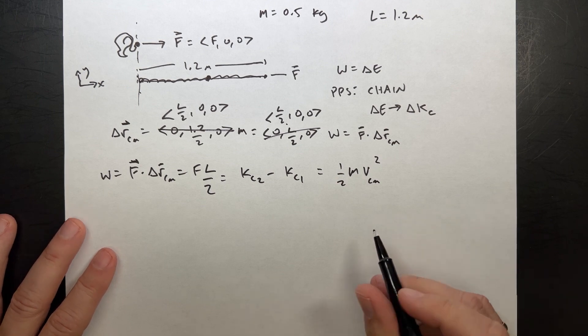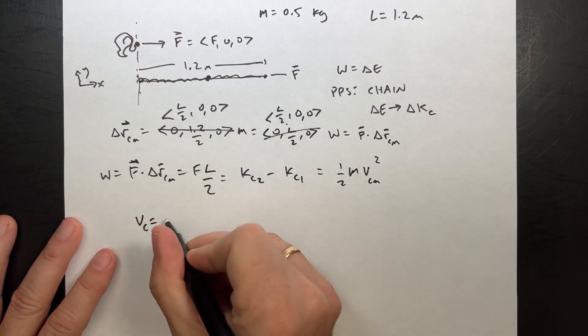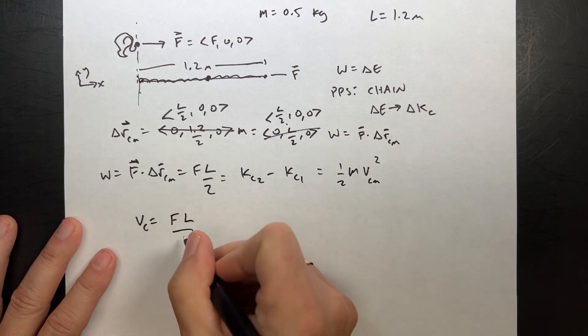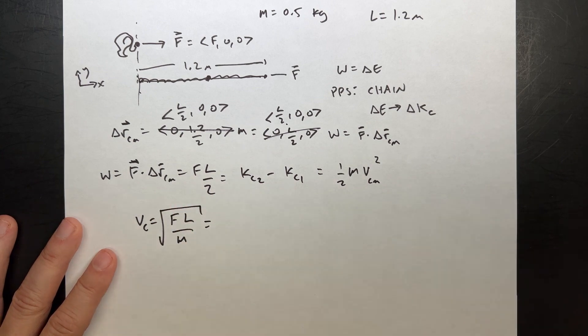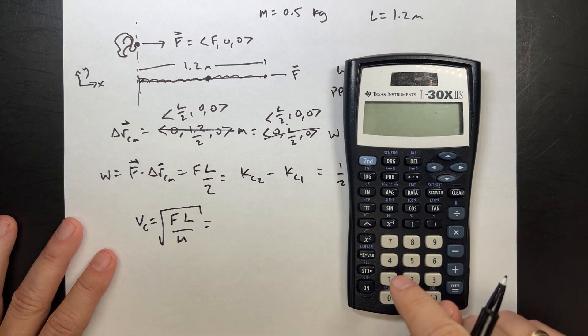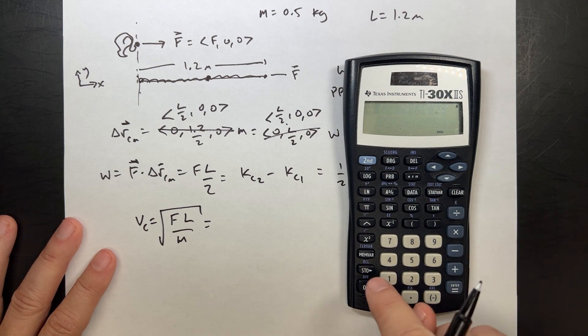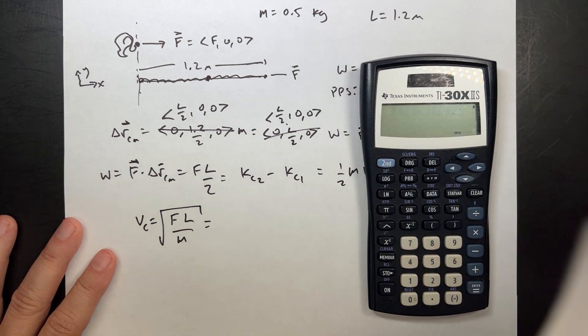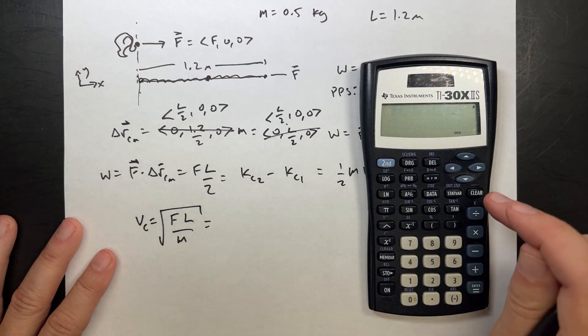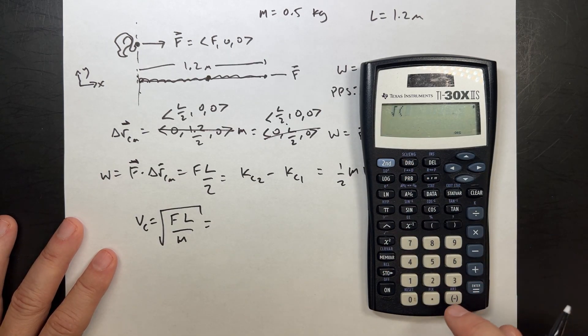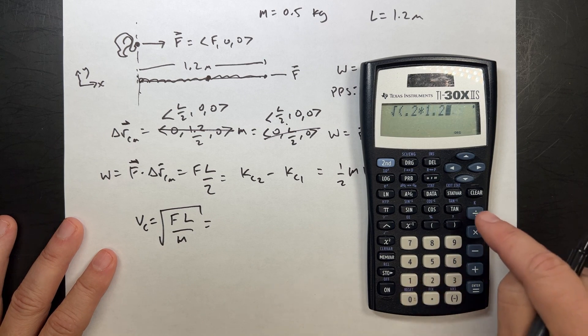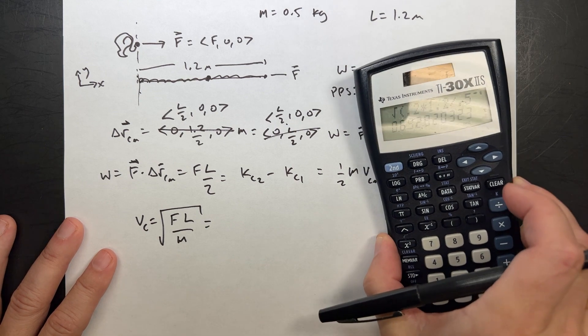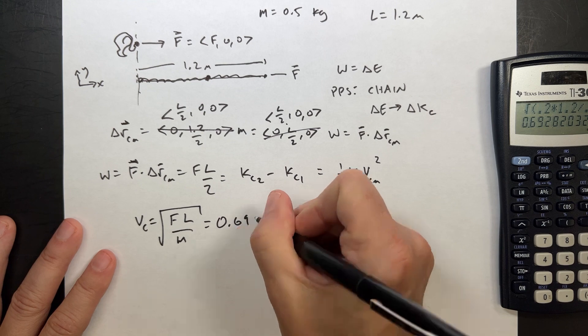So that's pretty easy. I can solve for V center of mass. V center of mass is going to be equal to, the twos are going to cancel. I'm going to get F L over M square root. So let's go ahead and put it into my numbers. I've made up these numbers. They may be unrealistic, but sometimes that happens. So I have a force of 0.2 Newtons. 0.2 times 1.2 divided by 0.5 equals 0.69. 0.69 meters per second.